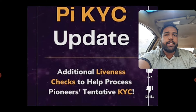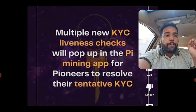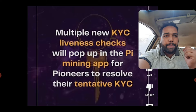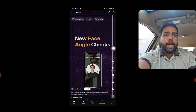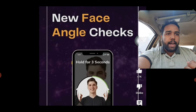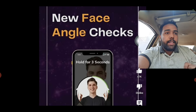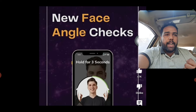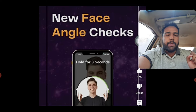Pi Network will be launching a liveness check to help resolve tentative KYC. Multiple new KYC liveness check pop-ups will appear in the Pi mining app for type two and type three people, to help resolve their KYC. The pop-up will ask you to do some face angle checks — like smiling, looking left, looking right, or looking down. There will be multiple steps, similar to what was done in ICE Network mining.